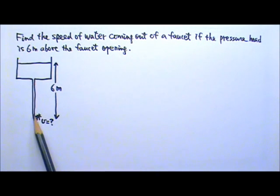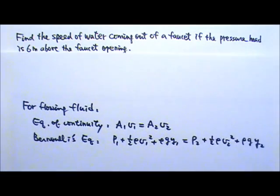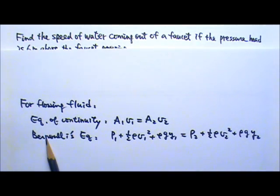Here we have a flowing fluid problem. For flowing fluid, we have two equations we can use. The equation of continuity which is A1V1 equals A2V2. A times V is also the volume flow rate, volume of flow per unit time. And Bernoulli's equation that tells us the pressure plus one half rho V squared plus rho gy is a constant.